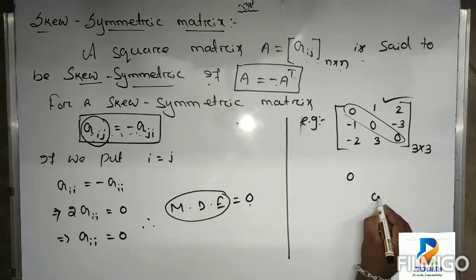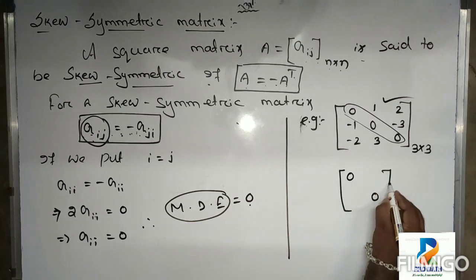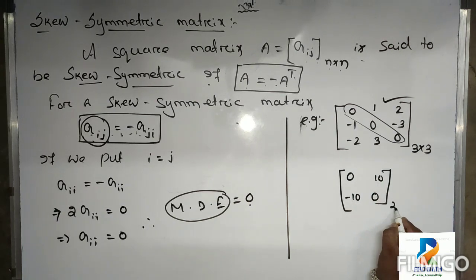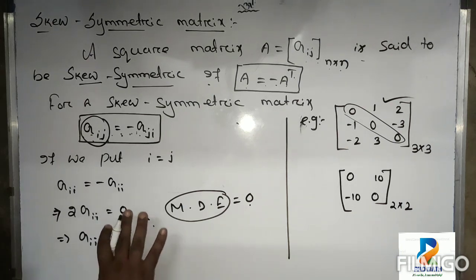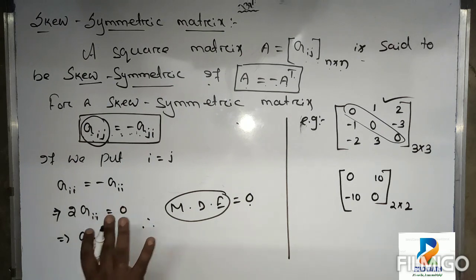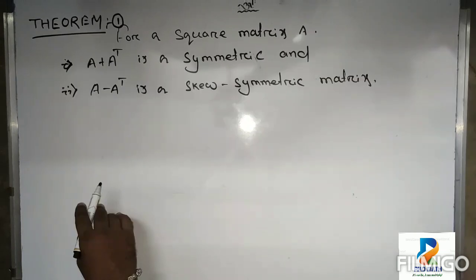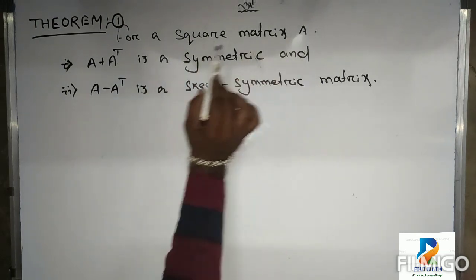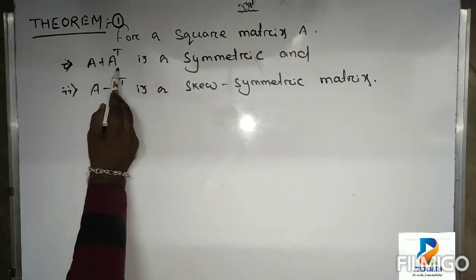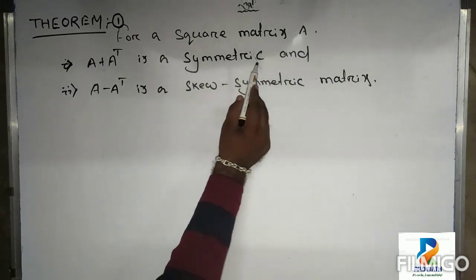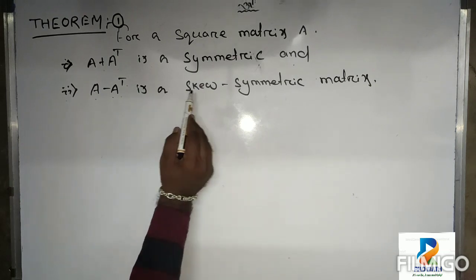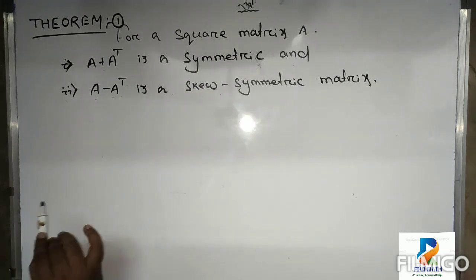For a 2×2 skew symmetric matrix, if you take 10 at one position, then the opposite entry is minus 10. Now the theorem: for a square matrix A, point 1 — A plus A transpose is a symmetric matrix, and point 2 — A minus A transpose is a skew symmetric matrix.